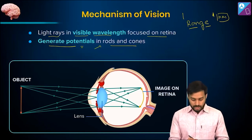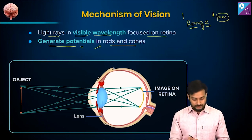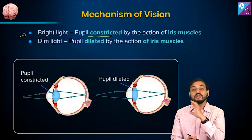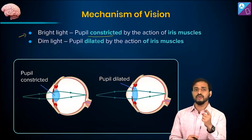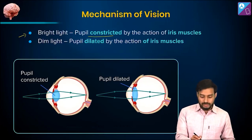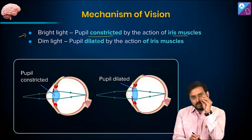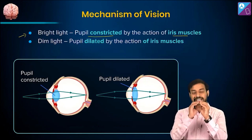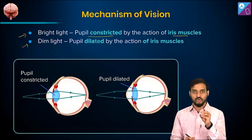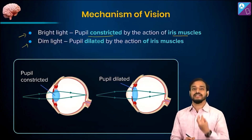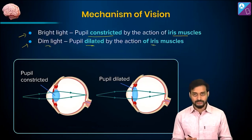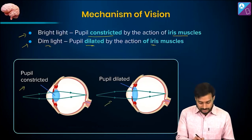The image forms on the retina, but we need the brain to perceive it. In bright light, the pupil will constrict — you should not look at the sun directly because it's too much light. Bright light: pupil constricted by the action of the iris muscles, becoming smaller to regulate how much light enters. Dim light: the amount of light is low, so the pupil dilates by the action of the iris muscles to allow more light in.